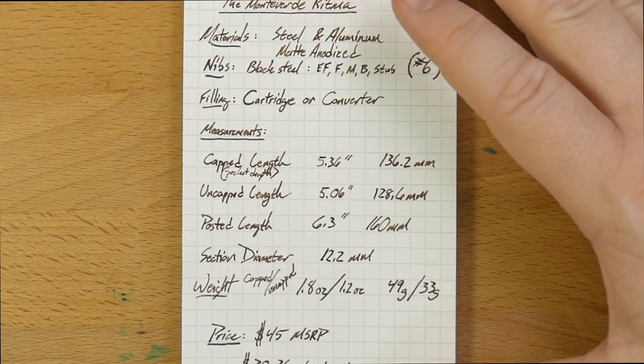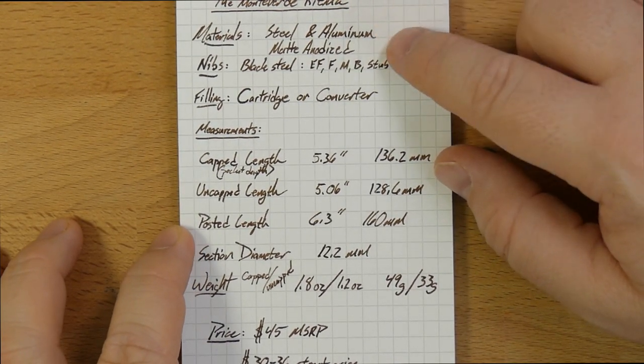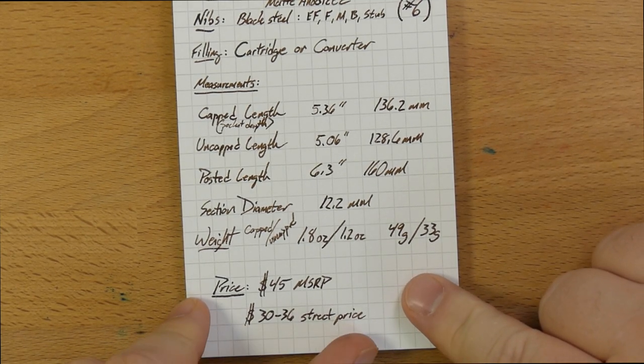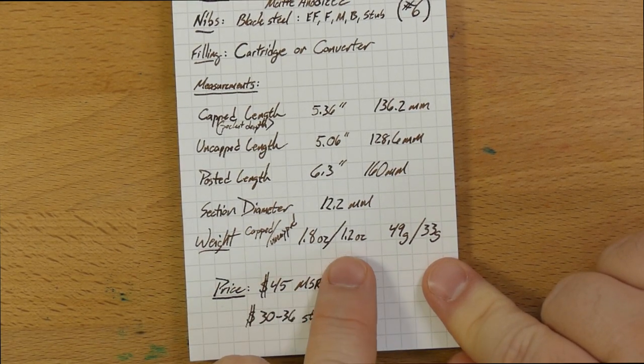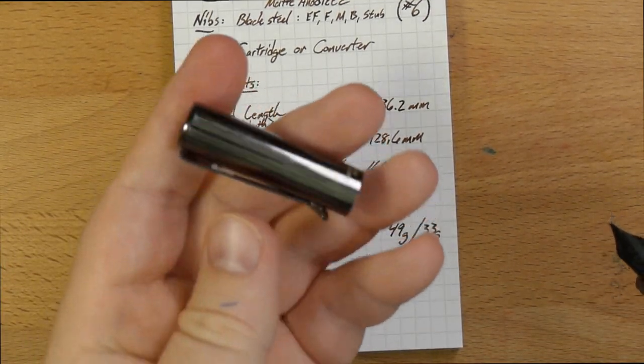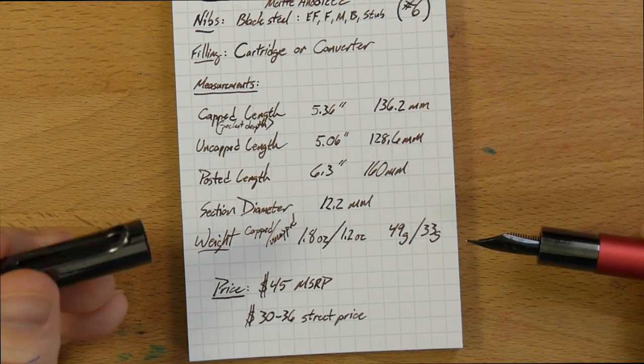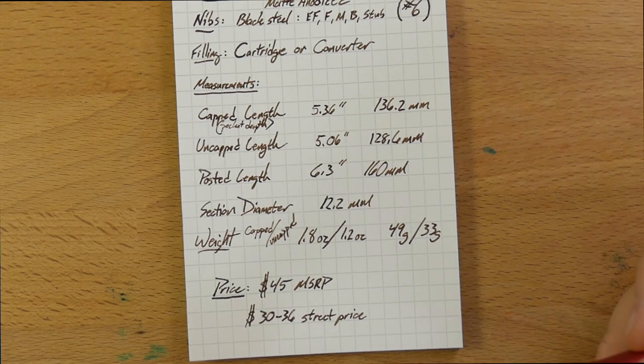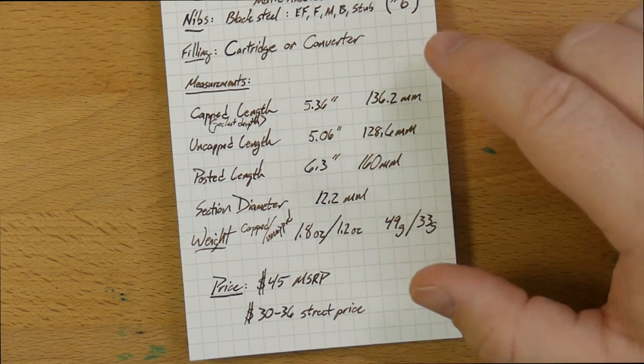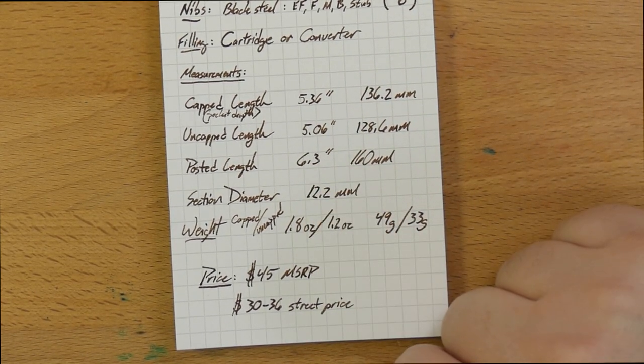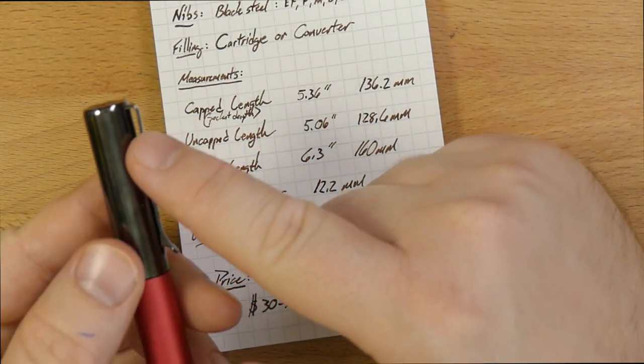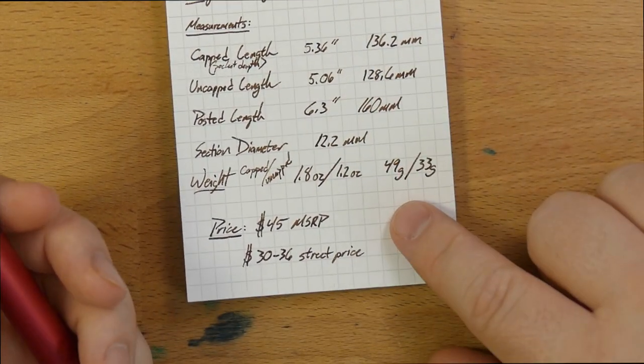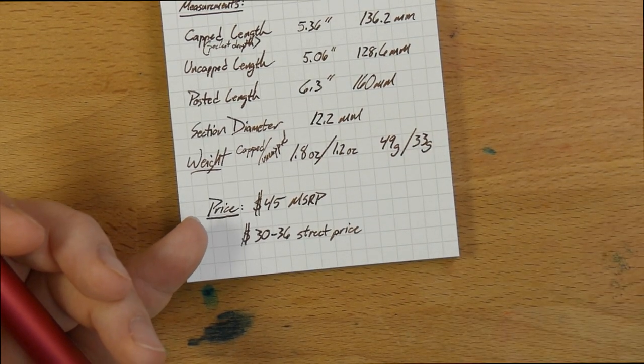As for stats and things of that nature, you have all kinds of stuff here. Steel and aluminum body with a matte anodization. We talked about the number six nib, cartridge and converter filling. Now measurements. This is a fairly heavy pen type. 1.8 ounces capped and 1.2 ounces uncapped. This is 0.6 ounces. This cap, that's fairly heavy for a cap. I think that's several grams. Put this cap aside, this pen is actually a very nice weight. The cap length is about five and a half inches, little under about five inches uncapped, which you'll usually be using. Posted length is 6.3 inches. I didn't do a pocket depth because the clip on here comes right up to the top. So the pocket depth is essentially 5.36 inches. And as for price, 45 bucks is the manufacturer's suggested retail price.